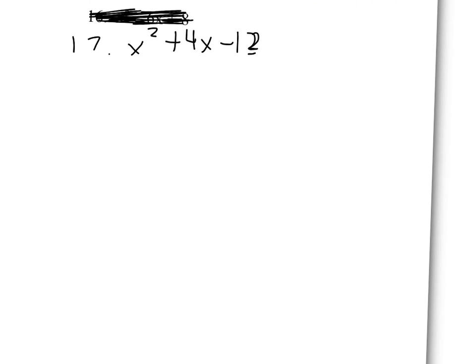Alright, and we'll do one more for you. Number 17 here. This is the first one we've shown you with a negative at the end here, and we know that the only way to multiply to a negative number is if my signs are going to be different.